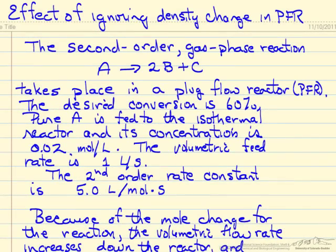In this example we want to look at the effect of density change on the size of a plug flow reactor, and if we ignore that density change, how much difference does it make in the volume we require to obtain a certain conversion.